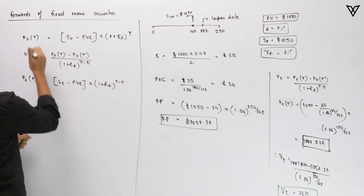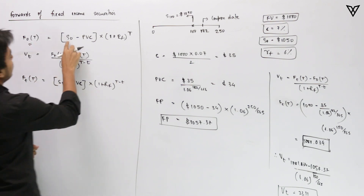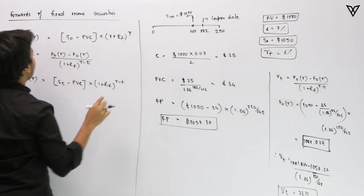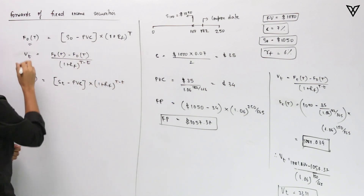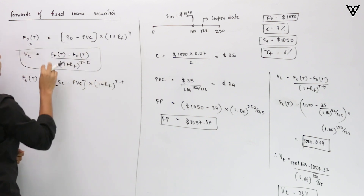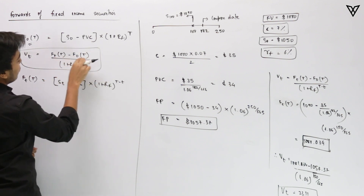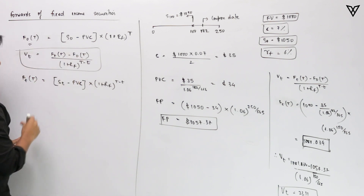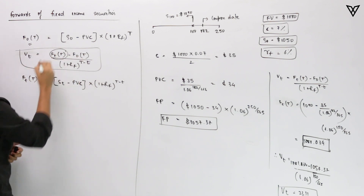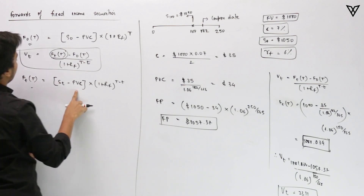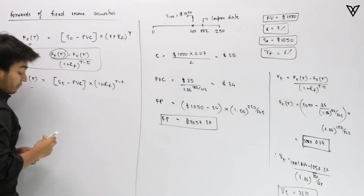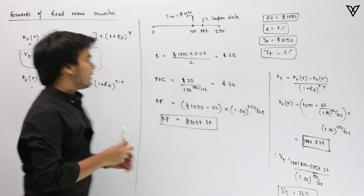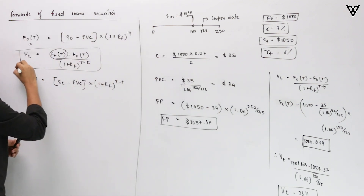The forward price is calculated the same way: you have the spot price, you deduct the present value of coupon, then multiply by (1 + rf)^T. To calculate the value, you use f(t,T) minus f(0,T) — that is the new forward price minus the old forward price — divided by (1 + rf)^(T − t). You calculate this using: spot price minus the present value of coupon, multiplied by (1 + rf)^(T − t).